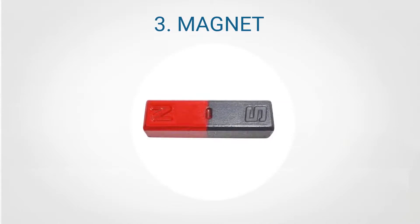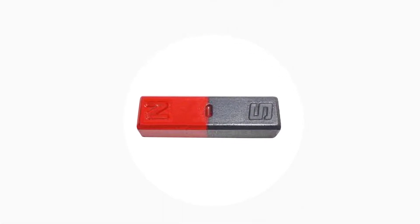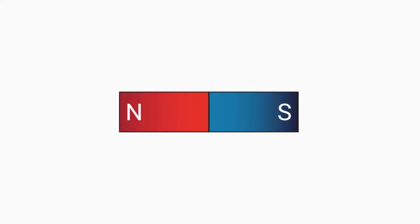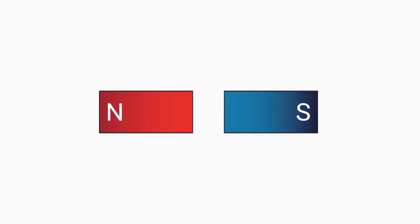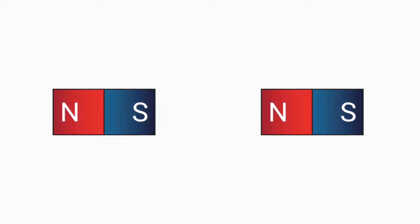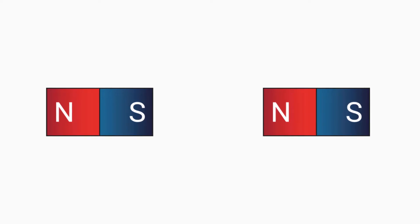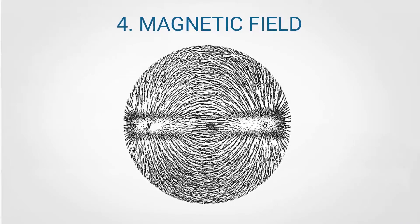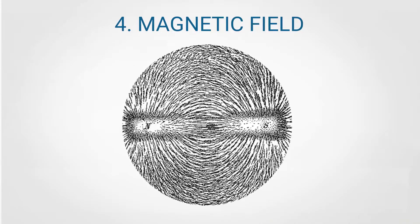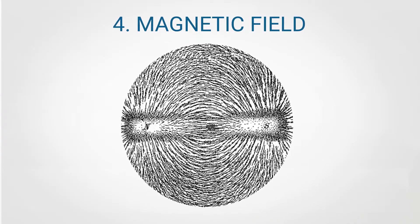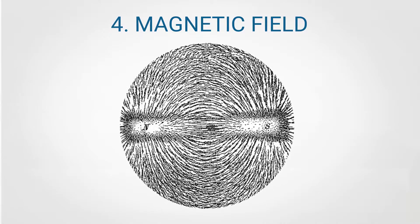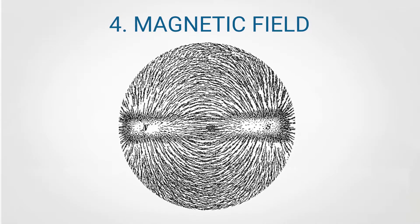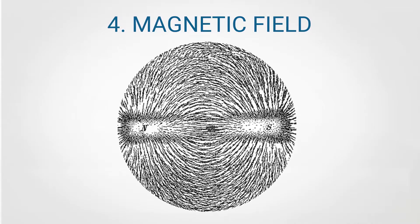A magnet is an object that produces a magnetic field. Each magnet has a north and a south pole. Inside a magnet, there will always be a south and a north pole. Even dividing the magnet into two parts, the remaining parts will have a north and a south pole. A magnetic field is invisible but is responsible for the most notable property of a magnet: a force that pulls on other ferromagnetic materials, such as iron, and attracts or repels other magnets.